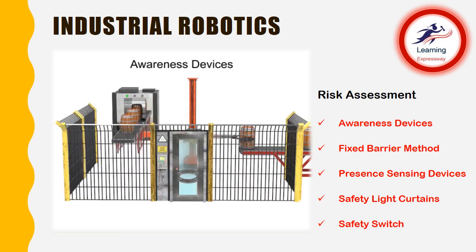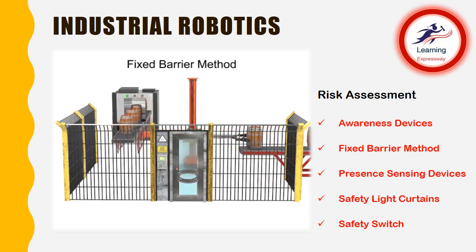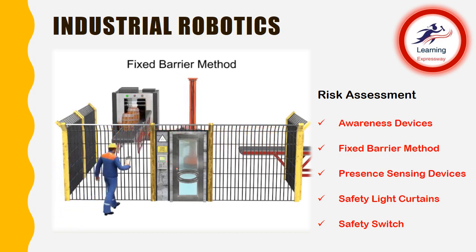Guarding methods are used to prevent unauthorized access to the work envelope. The simplest is known as the fixed barrier method, such as a fence or wall. The physical barrier is put around the work area and is configured in such a way that prevents access through, over, or around without a special key or access code.